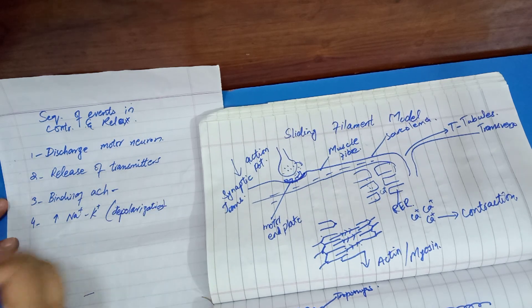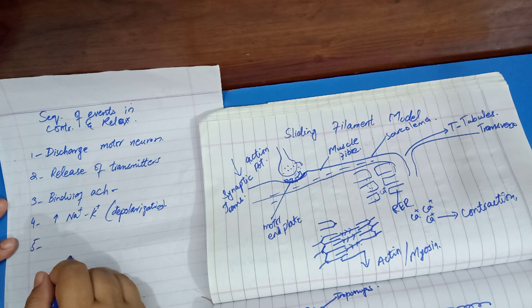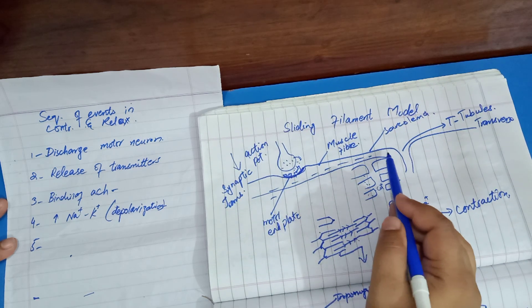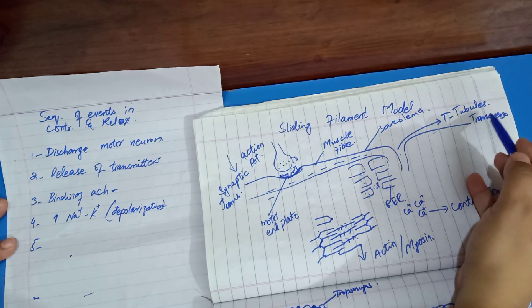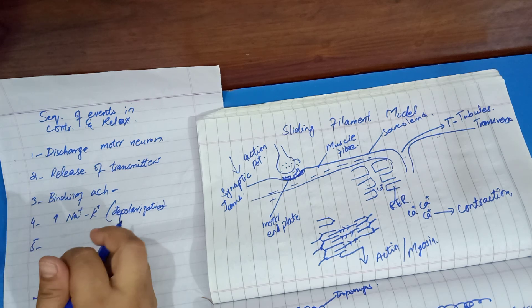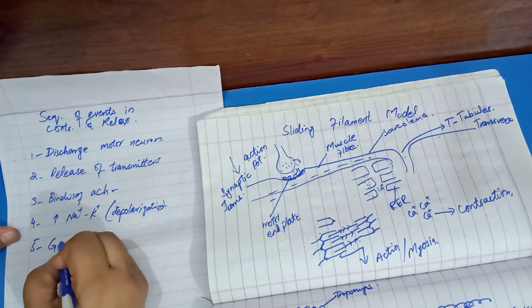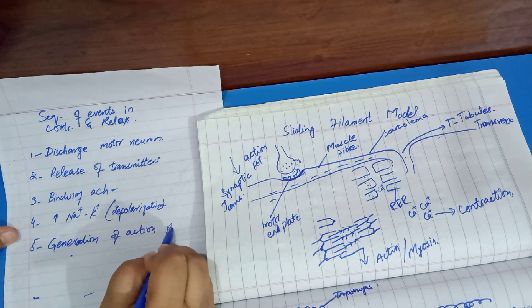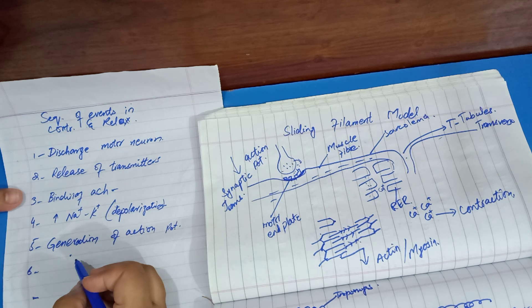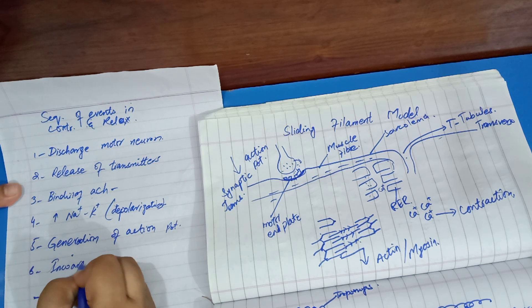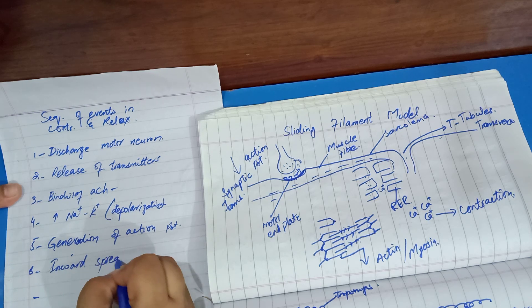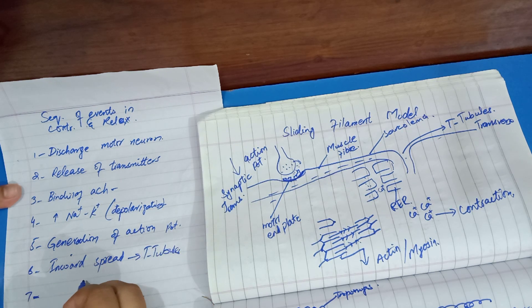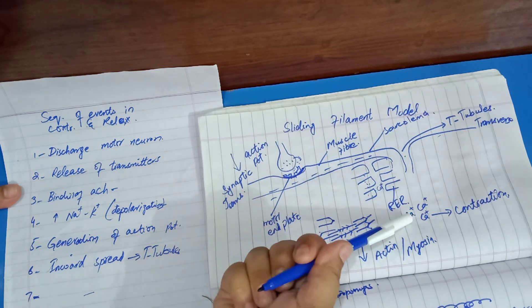Acetylcholine binding increases sodium and potassium conductance at the end plate, causing depolarization. Sodium channels open and the depolarization spreads into the transverse tubules (T-tubules), generating an action potential which propagates inward.